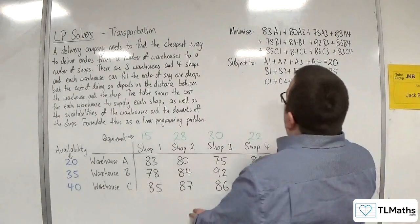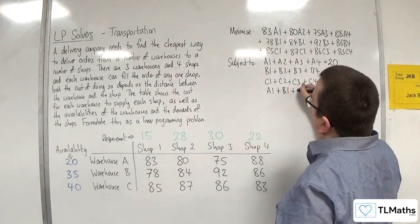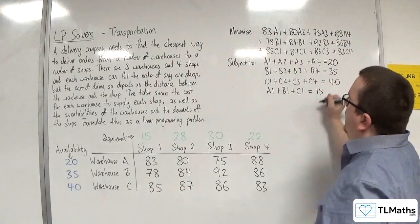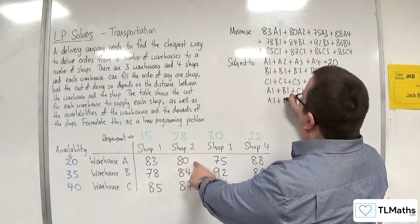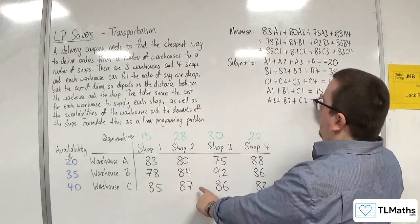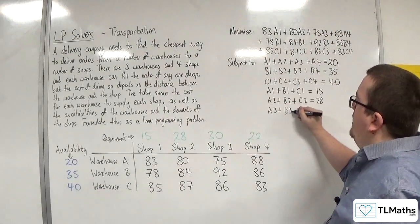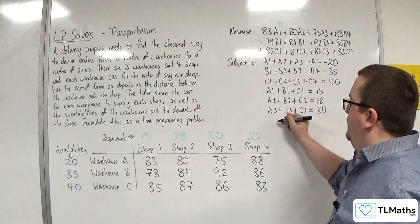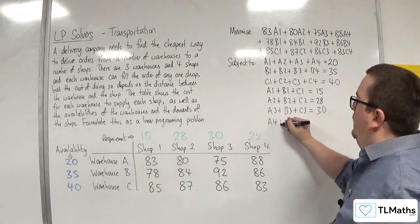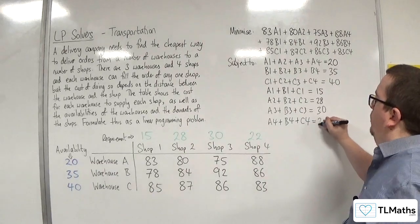So I must have A1 plus B1 plus C1, that's got to be equal to 15. And A2 plus B2 plus C2 has got to be equal to 28. A3 plus B3 plus C3 has got to be equal to 30. And A4 plus B4 plus C4 has got to be equal to 22.